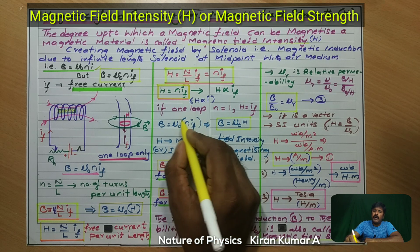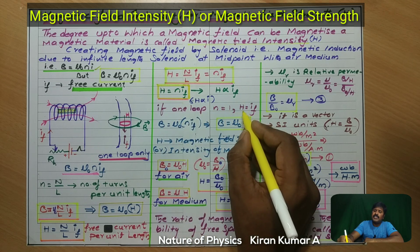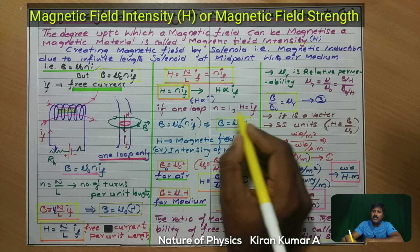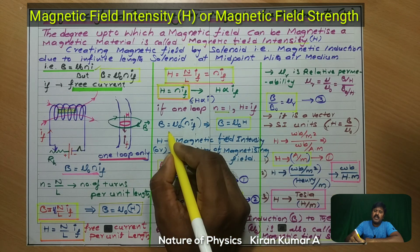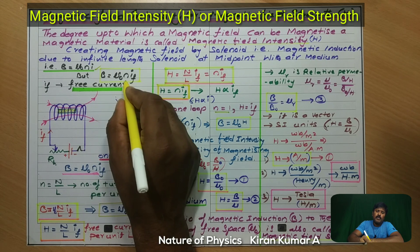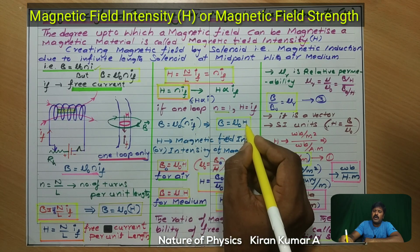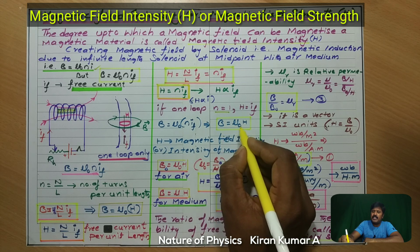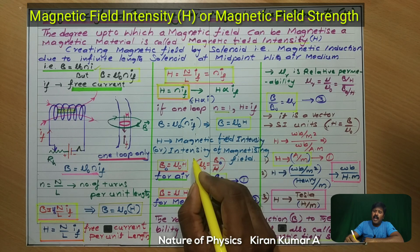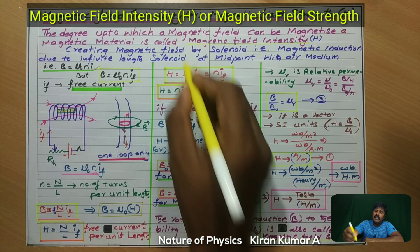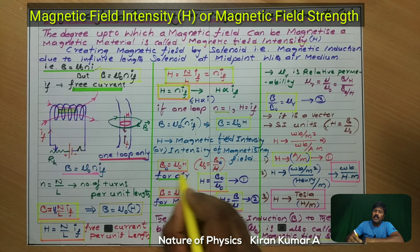Since n = 1 for one loop, H = If. From the basic formula B = μ₀nIf, where nIf is written as H, we finally get B = μ₀H. Another name for magnetic field intensity is the intensity of the magnetizing field.